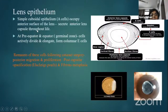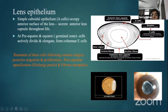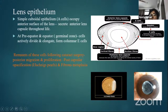The lens epithelium over the anterior surface consists of simple cuboidal epithelium that secretes the lens capsule throughout life. Towards the equator and pre-equator, you have the germinal zone, where there are actively dividing cells with high mitotic activity that elongate and form the columnar E cells. Clinically, remnants of these cells following cataract surgery can migrate posteriorly and proliferate, leading to posterior capsular opacification — seen as Elschnig pearls or the fibrous type of opacification.